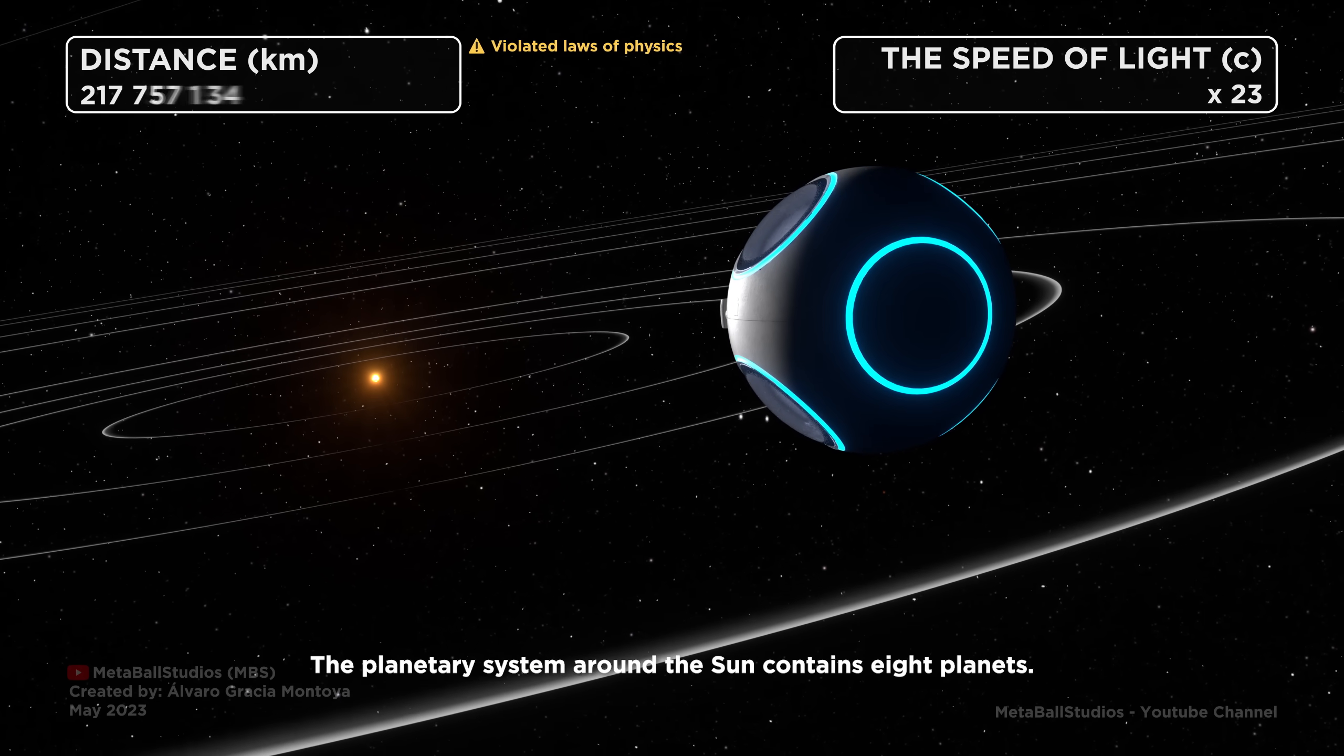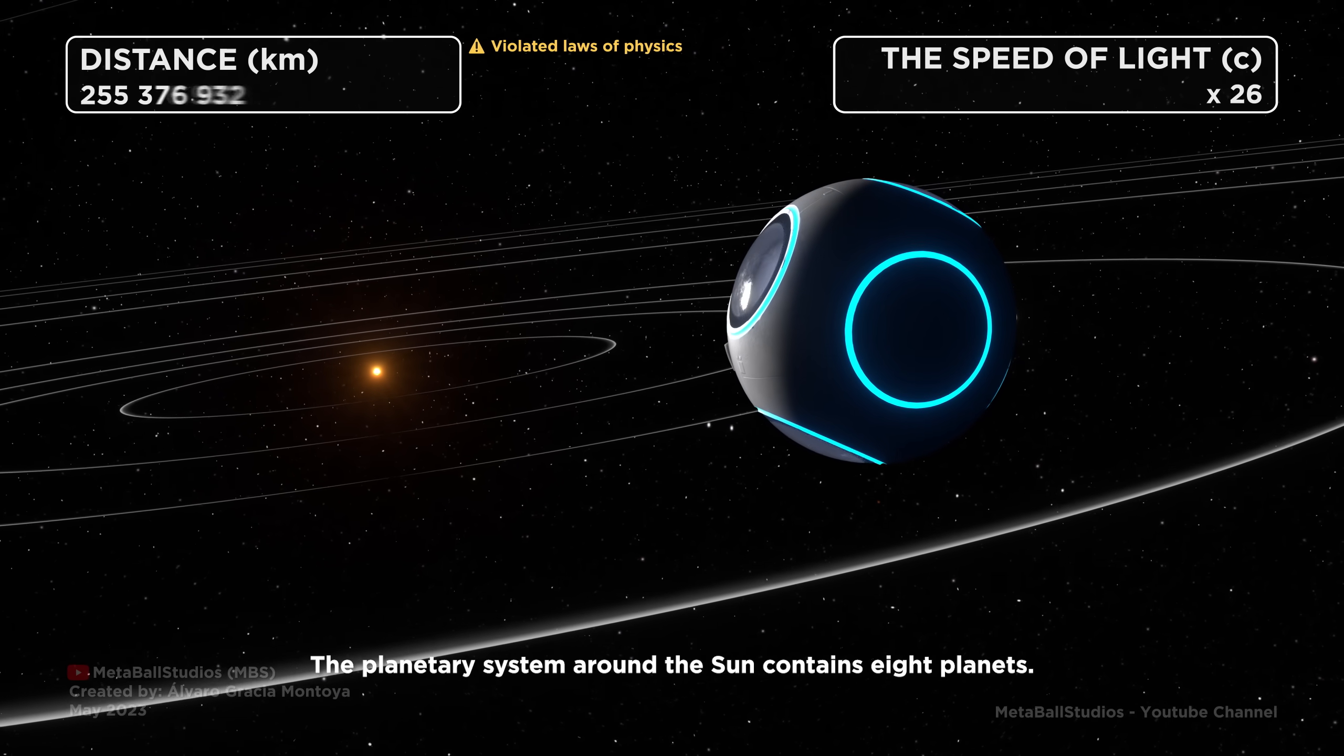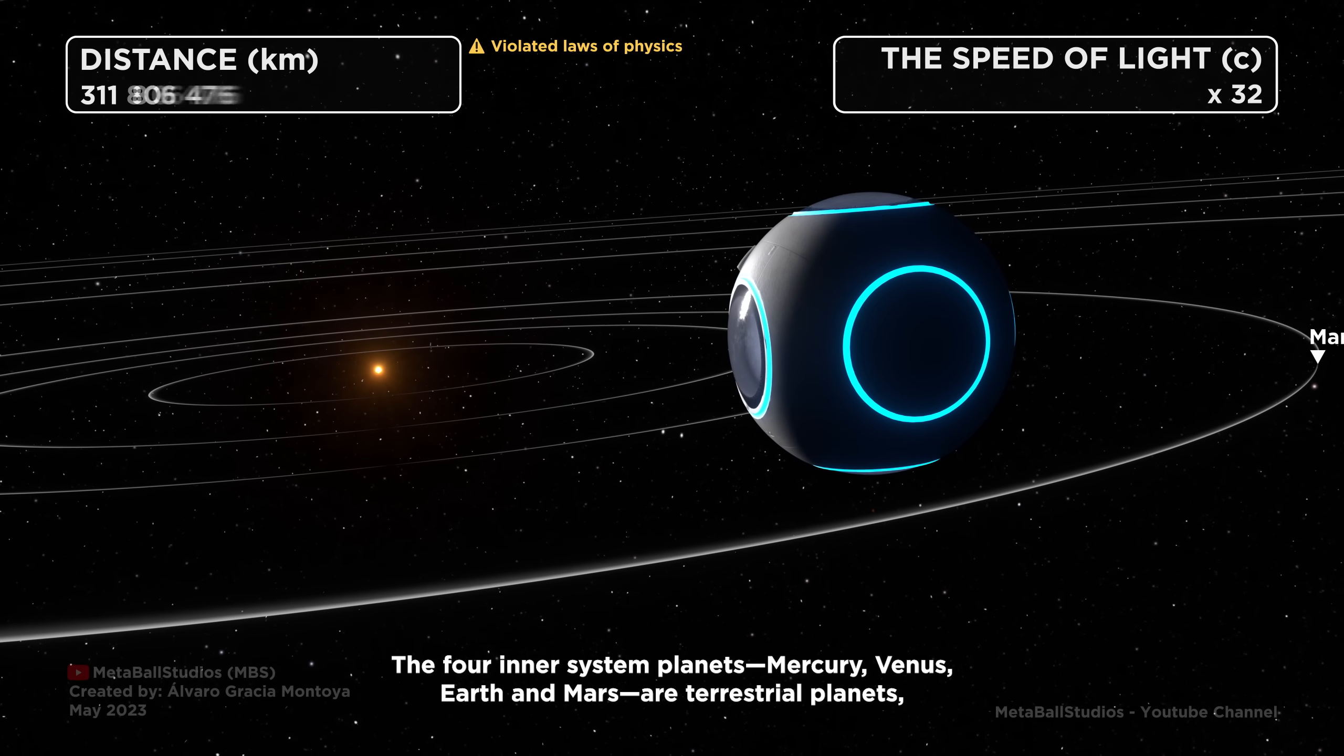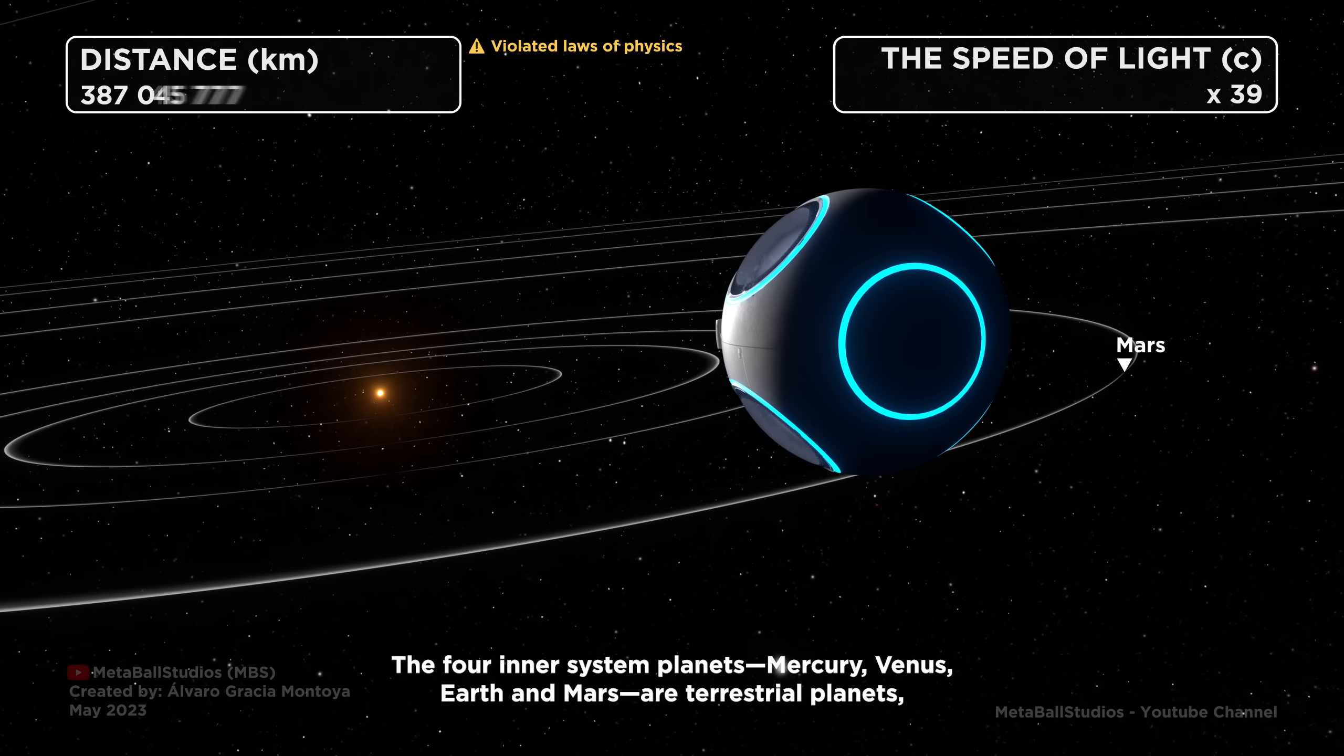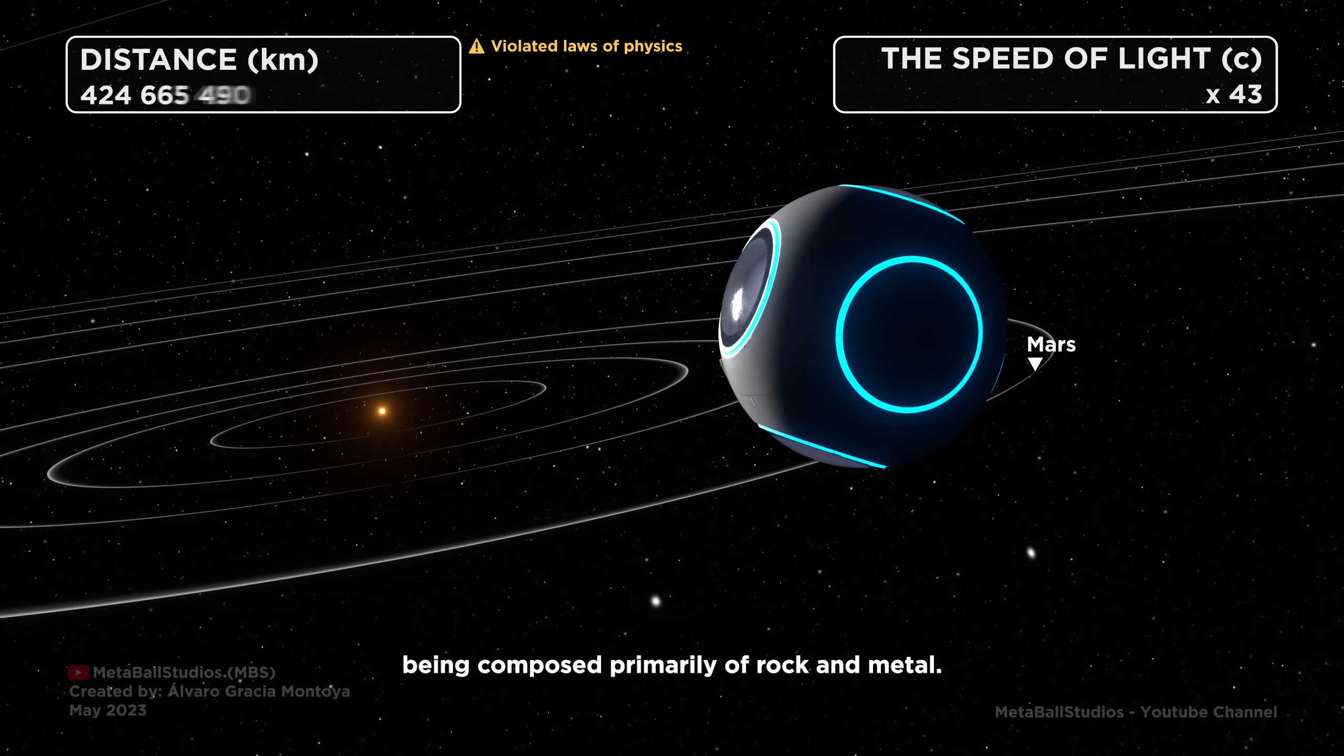The planetary system around the Sun contains eight planets. The four inner system planets, Mercury, Venus, Earth and Mars, are terrestrial planets, being composed primarily of rock and metal.